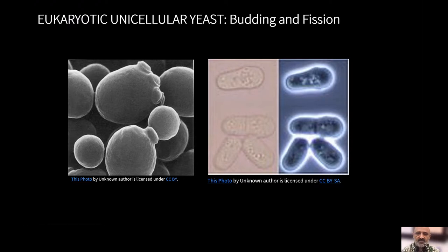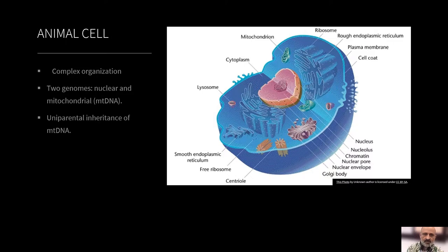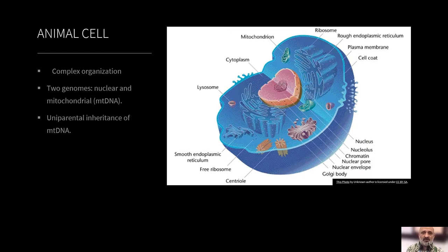Moving on to eukaryotic cells — eukaryotic cells are far more complex. You have a membrane as well as a cell wall, but you also have the nucleus, which is a membrane that encloses the genetic material. Within an animal cell, you will also have the mitochondrial genome. So looking at the cell from the perspective of genomics, we need to look at the genomes themselves. The mitochondrial genome is generally inherited maternally, while the nucleus and chromosomal material are inherited biparentally.